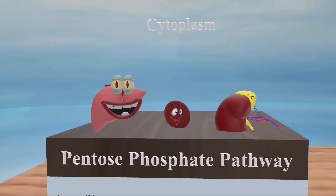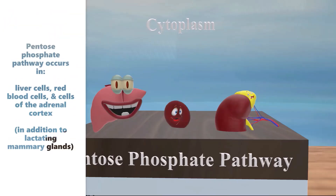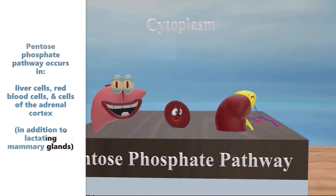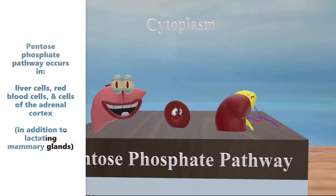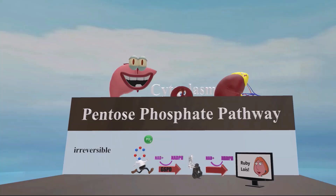There are various happy characters here: the liver, the red blood cell, and the adrenal cortex. This reminds us that the pentose phosphate pathway occurs in liver cells, red blood cells, and cells of the adrenal cortex. Another site is the lactating mammary glands, which we'll see is quite logical.